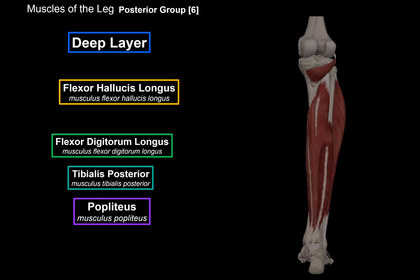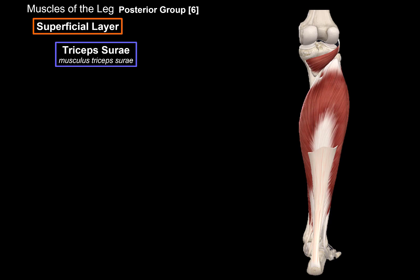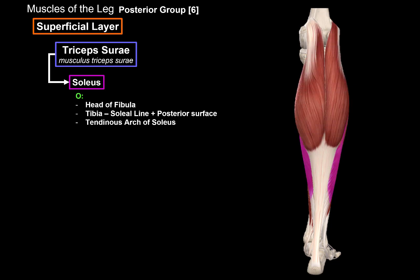Let's do the superficial layer. The superficial layer mainly consists of the triceps surae muscle, which is a triceps — so three parts to this muscle. There's the soleus, which is the deepest part. It originates from the head of the fibula, the soleal line and posterior surface of the tibia, and the tendinous arch of the soleus, which is a fibrous arch formed by fascia.